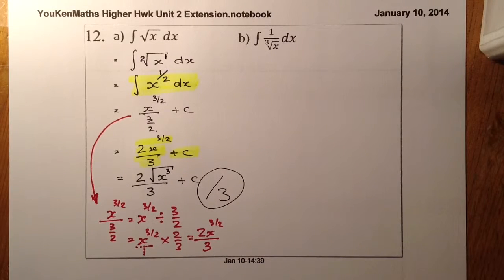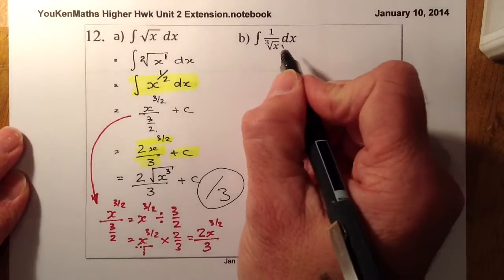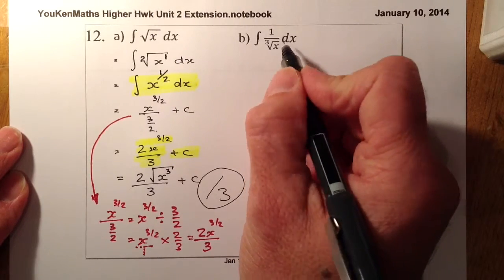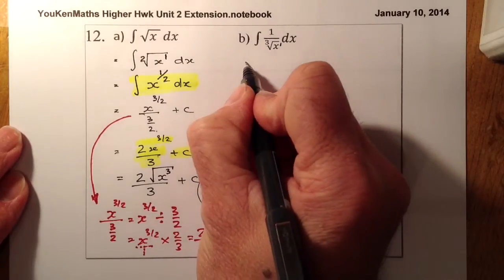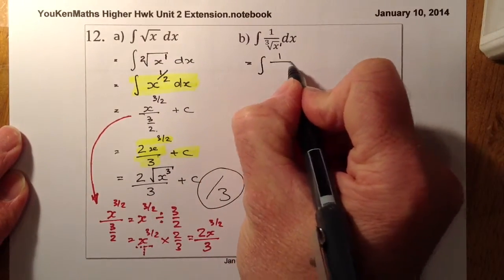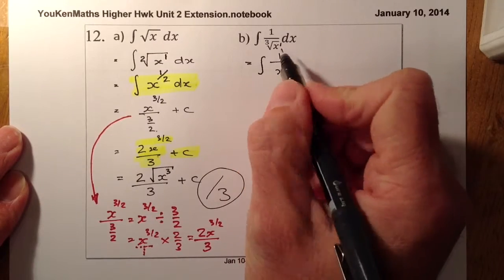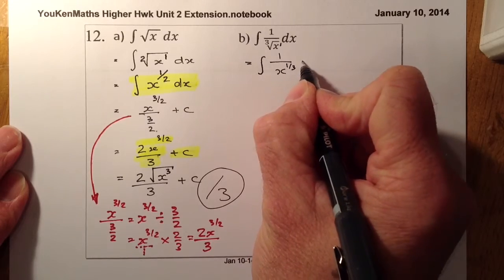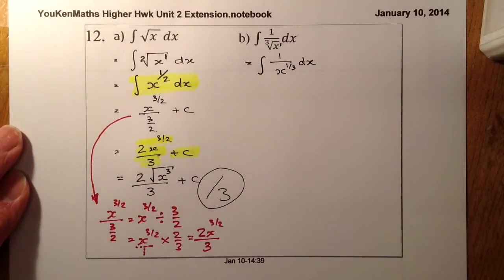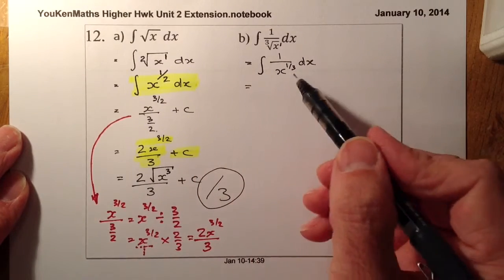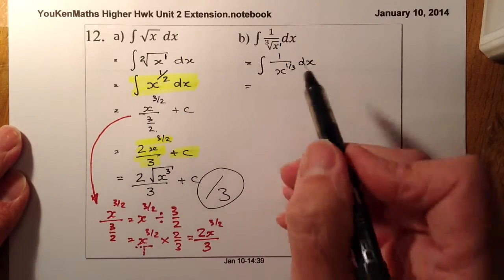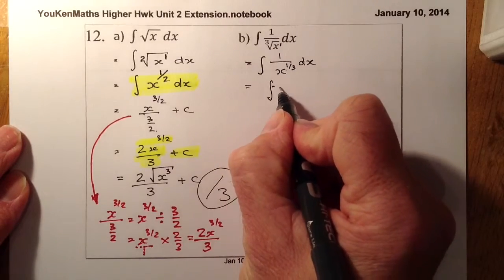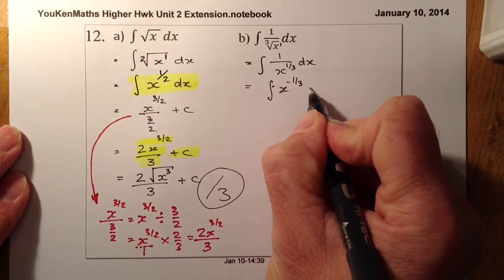Moving on to the next question, it's going to get a bit more complicated. I've got a cubed root of X on the bottom, and I know there's a power of 1 sitting there. I'll sort that bottom part out first. So I'm still integrating: I've got 1 all over X to the power of 1 over 3 — that's a fraction — with respect to X. But I still can't integrate from there because the X values are on the bottom, so I need them on the numerator. Taking it to the top gives me X to the minus a third with respect to X.